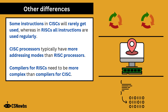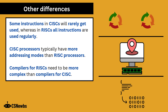CISC instructions often include many ways to access memory, such as immediate, direct, indirect, and indexed. Modes of memory addressing is its own topic in 2.4d, so those terms will be explained there. RISC keeps addressing modes simple, usually limited to a few types.